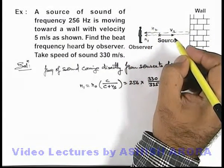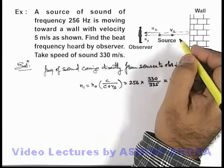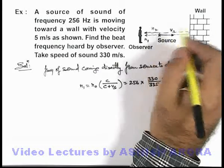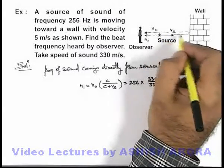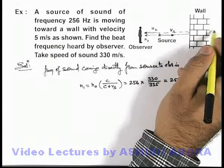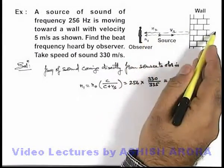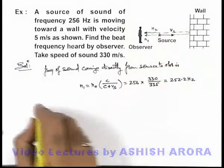As we have already studied in the previous section, the reflected sound can be considered to be coming from the image of the source. As the source is moving towards the wall, the image appears to be coming towards the wall from the other side. So for this observer, that image of source will be in approaching mode.